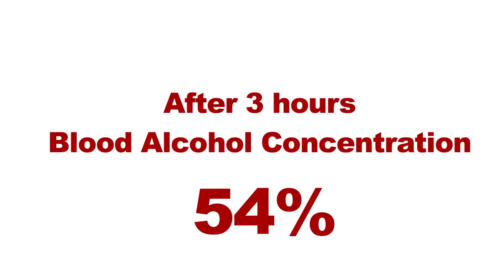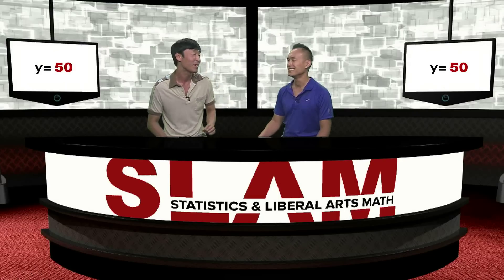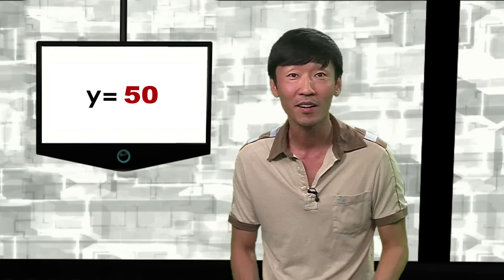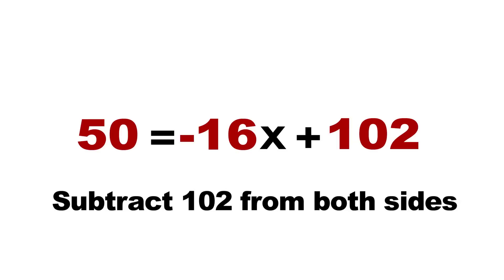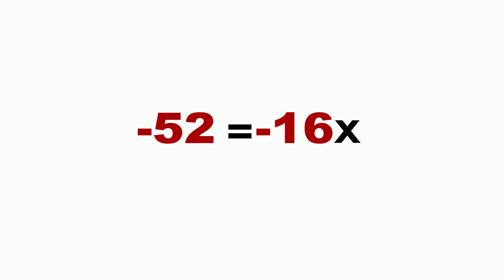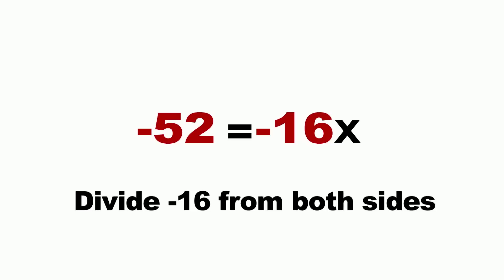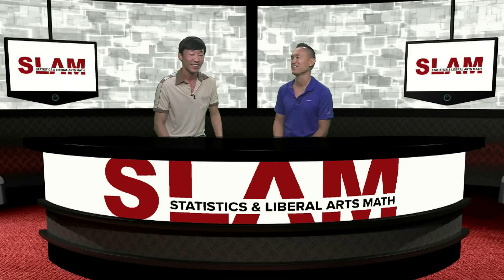A blood alcohol concentration of 50 is where driving deterioration begins. How do I know when your blood alcohol concentration reaches 50? I'm going to plug in 50 into the y value. I want to see when it becomes 50% so we can actually finally leave. So when you set y equal to 50, you get 50 equals negative 16x plus 102. Subtract 102 from both sides — you get negative 52 equals negative 16x. Divide both sides by negative 16, and you get 3.25! That's exactly how long I had to wait.